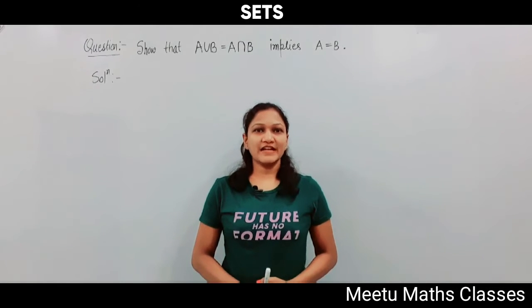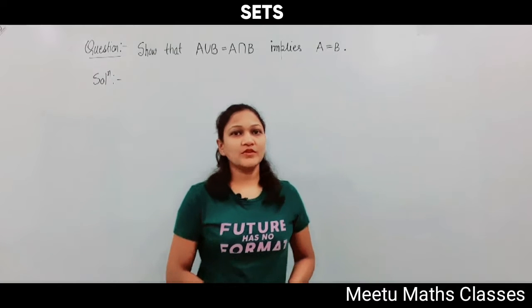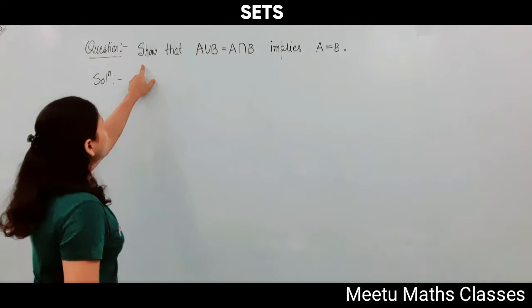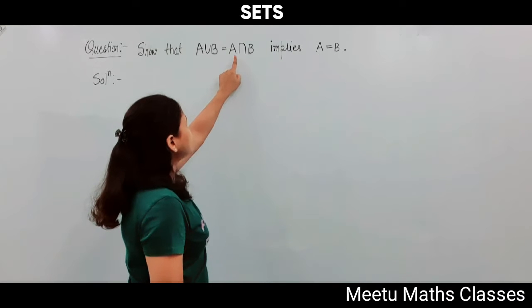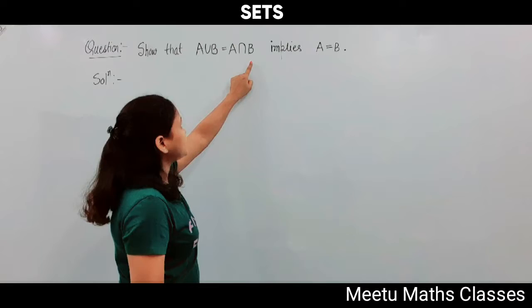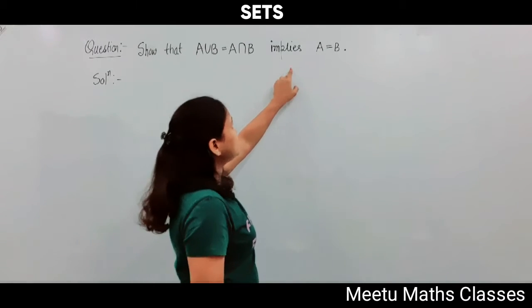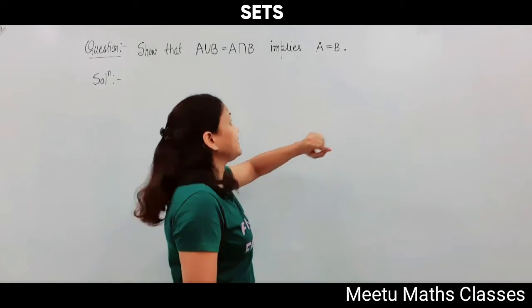Hello students, welcome to my maths classes. Your question is: show that A union B equals A intersection B implies that A equals B.